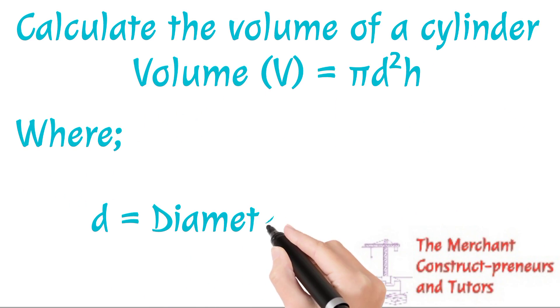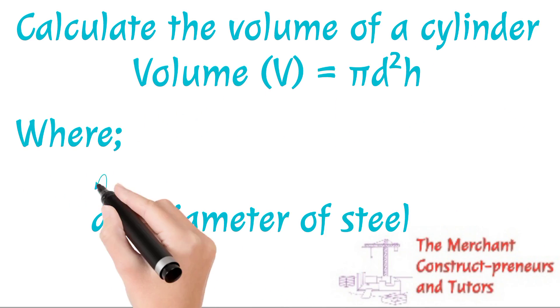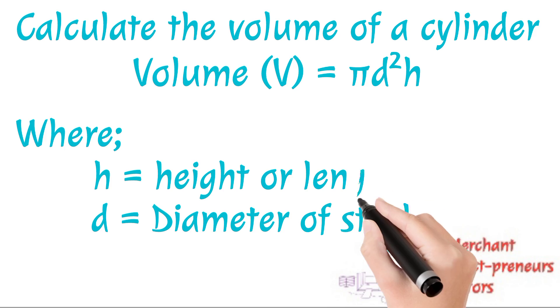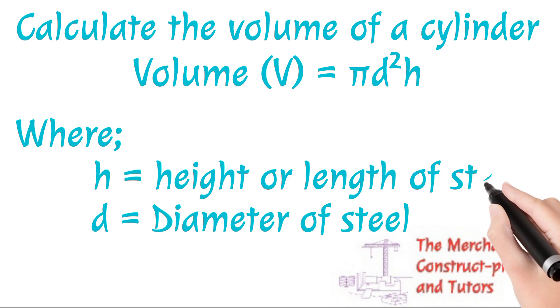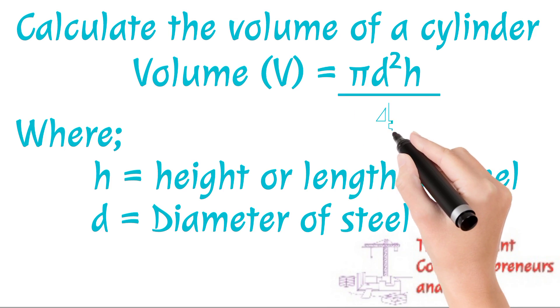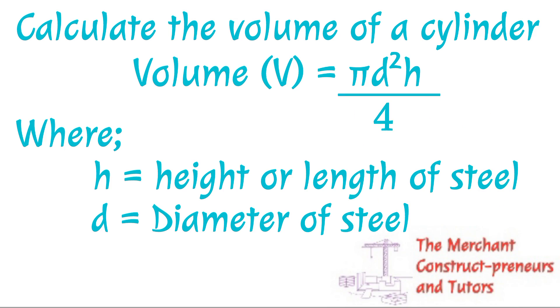Now we calculate the volume of a cylinder. You can agree that the reinforcement is a cylindrical shape, and it is raised or made to stand on its base. So the volume, if you recall from mathematics, volume of a cylinder is πd²h divided by 4, where h is the height or length of the steel and d is diameter.